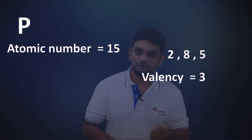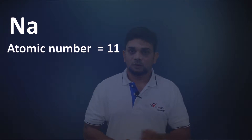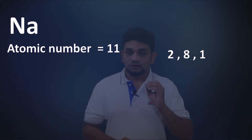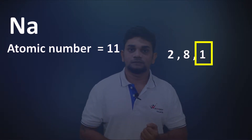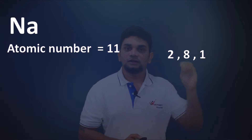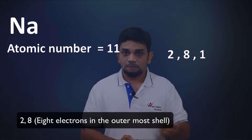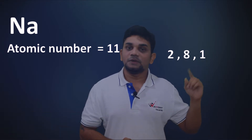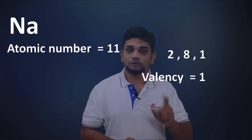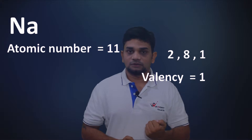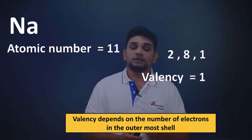Since the configuration of phosphorus is 2, 8, 5, the outermost shell has five electrons. To complete the octet, phosphorus needs three more electrons, so the valency is three. Valency is the number of electrons required to complete the octet. Now for sodium: atomic number is 11, configuration is 2, 8, 1. There is only one electron in the valence shell. Since donating one electron is easier than accepting seven, sodium donates that one electron, so its valency is one.